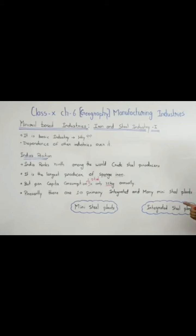Presently there are 10 primary integrated plants and many mini steel plants in India. Integrated plants are those where iron ore is processed at a larger scale — such as DISCO and SAIL — while mini steel plants are smaller and numerous across the country.